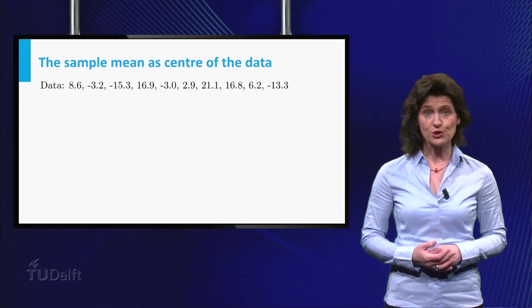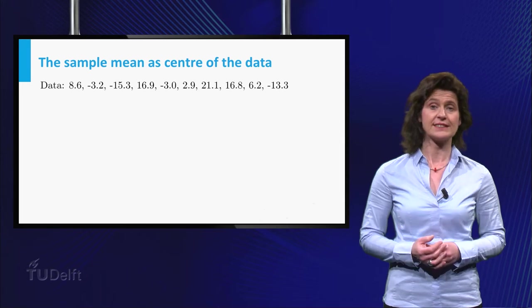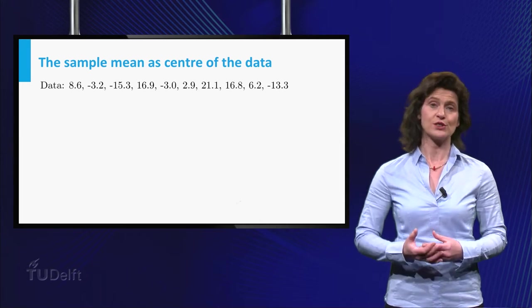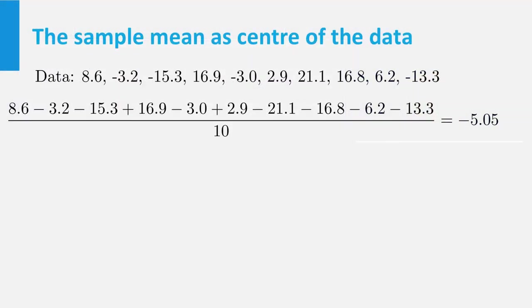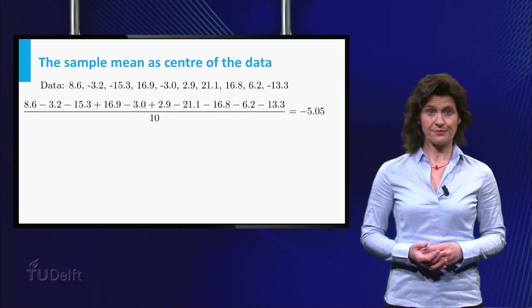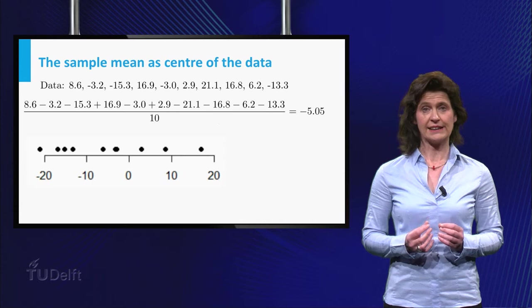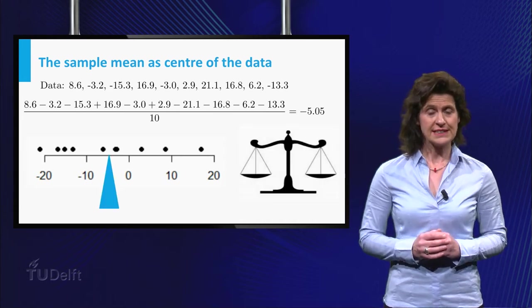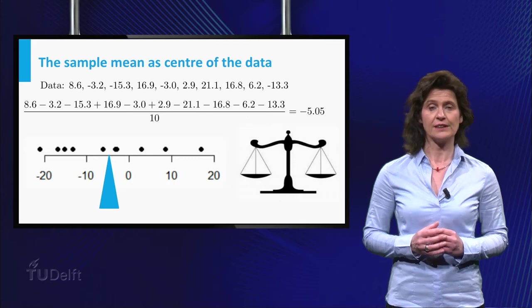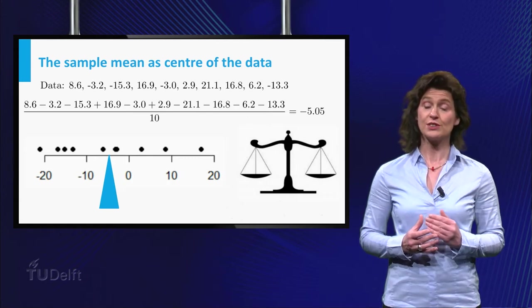The most commonly used method to describe the center of a dataset is the mean or average of the numbers. For the dataset given here, the mean is minus 5. This mean value has an interpretation in terms of balance. If you think of the points on the line as little equal masses, the mean of the data can be seen as the location on the line where the line should be supported to achieve balance.